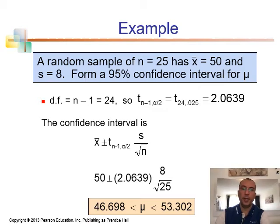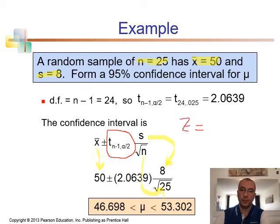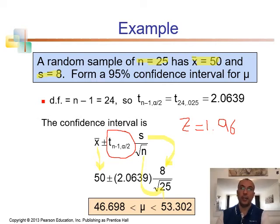Here's an example: we have a random sample of n equals 25, sample mean is 50, and sample standard deviation is 8. Calculate the 95 percent confidence interval. The sample mean is 50, s is 8, and sample size is 25. This time, instead of the z-value we use the t-value. With degrees of freedom of 24, the t-value becomes 2.0639. But recall the z-value for the same confidence level is 1.96, and as the sample size gets large enough, the t-value will be almost the same as the z-value - that's why with large enough sample size we can use the z-distribution.